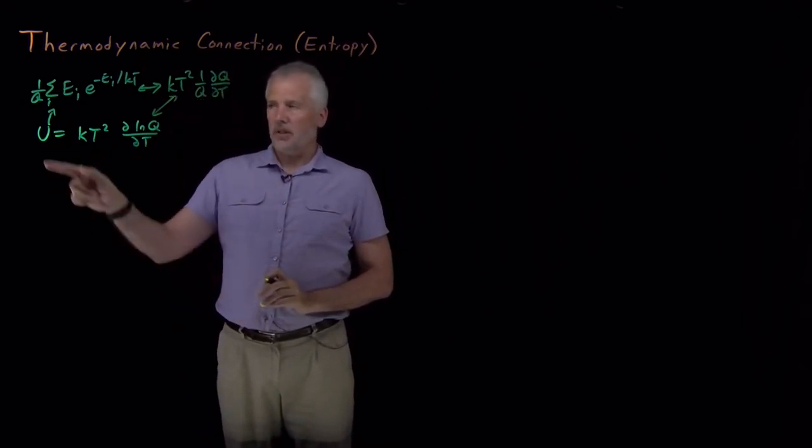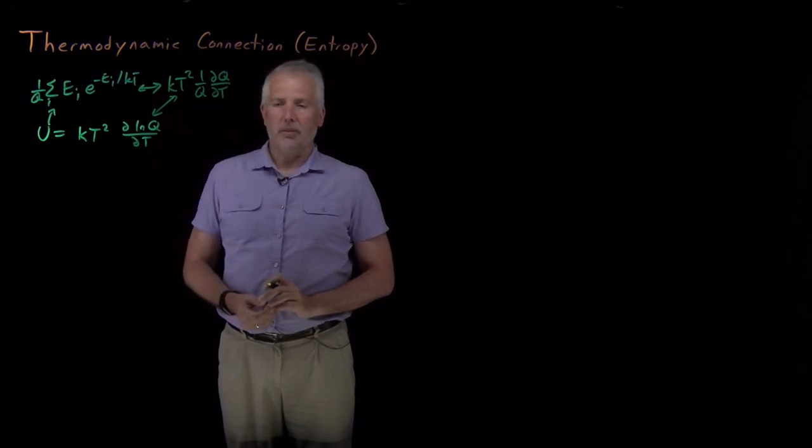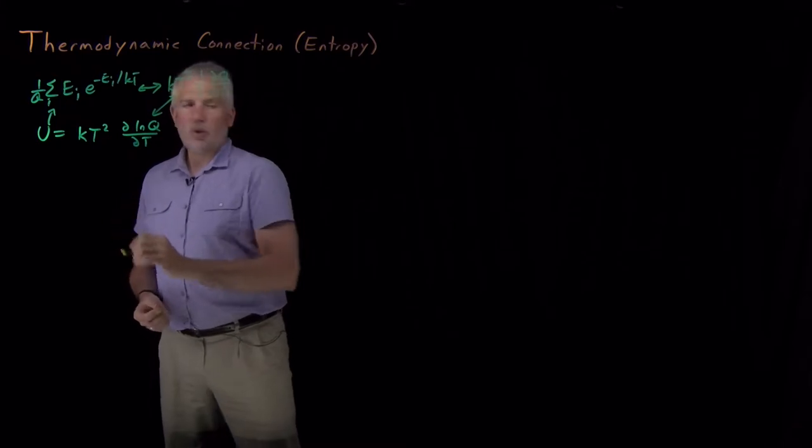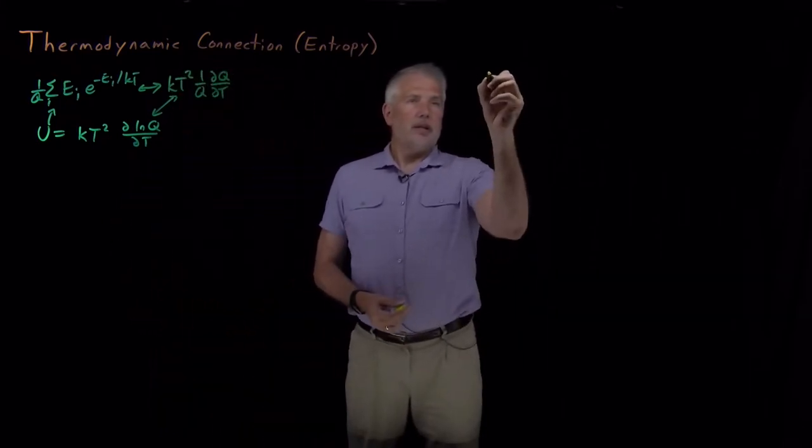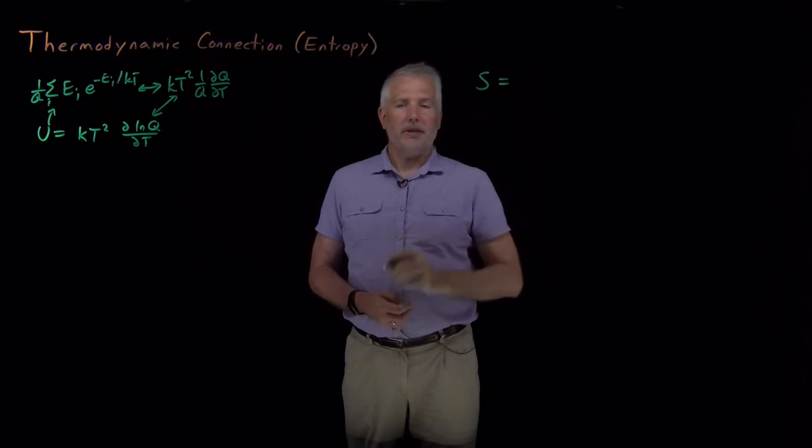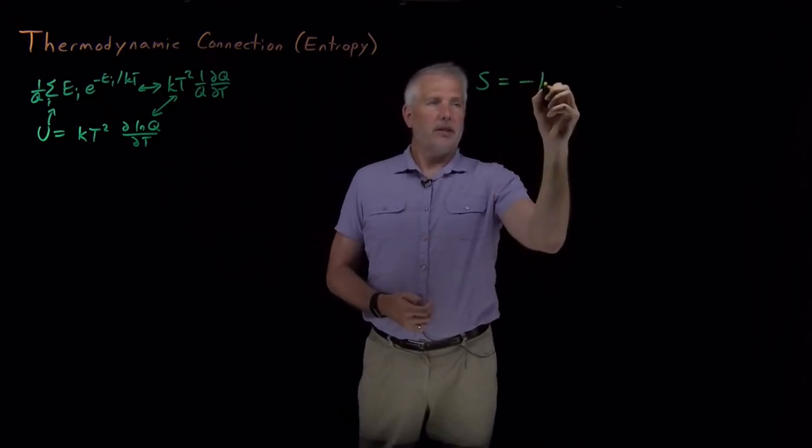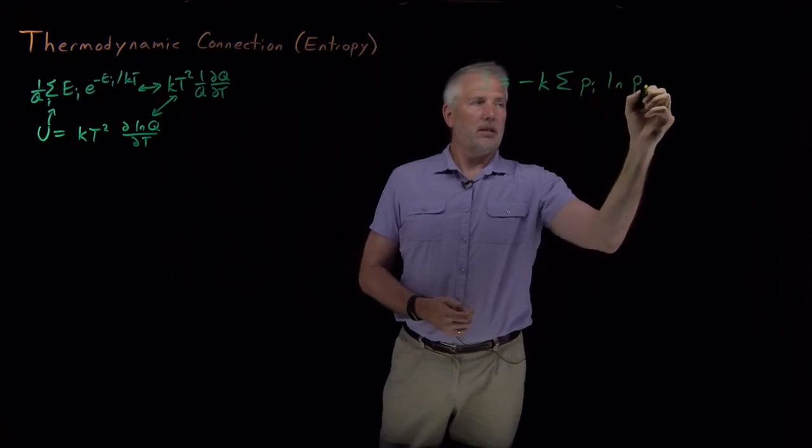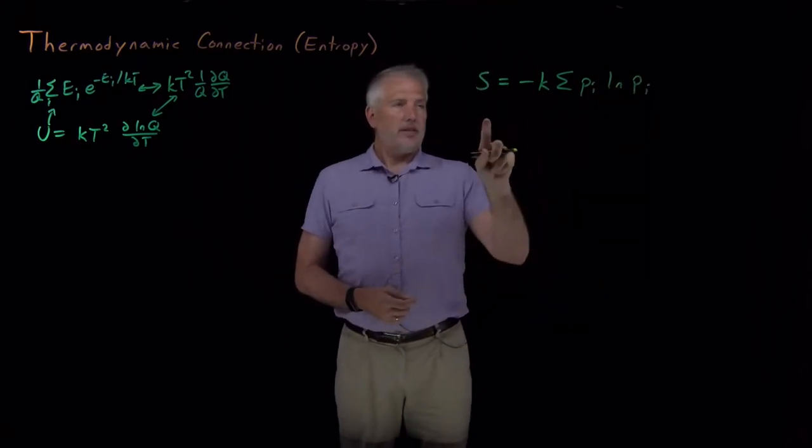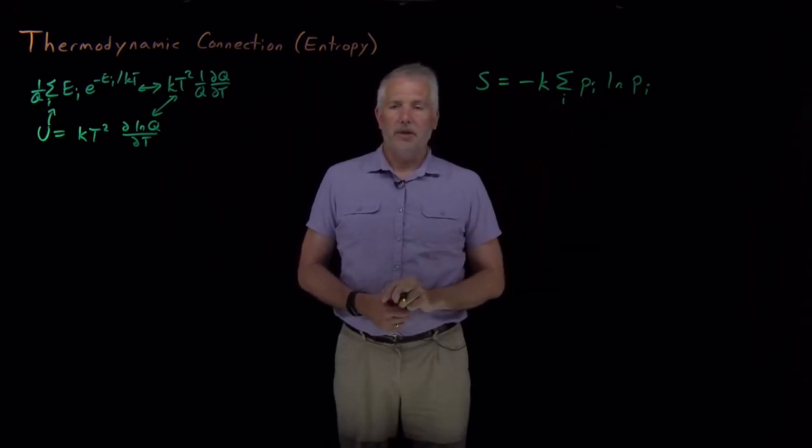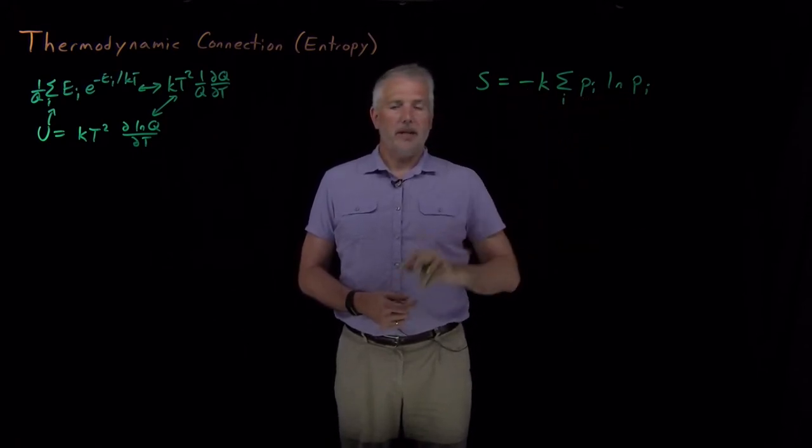But we can do this same process for other thermodynamic properties other than the energy. So for example, we can do that for the entropy. If we remember the microscopic definition of the entropy as sum of probability log probability for all the different states of the system multiplied by negative Boltzmann's constant.